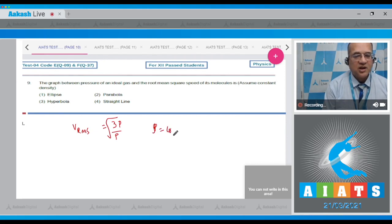In this case, he says that rho is kept constant. If rho is constant, then Vrms is proportional to the root of the pressure, or Vrms is equal to a constant k into root P.